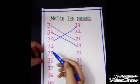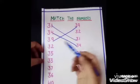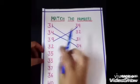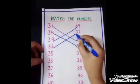Next number is 32, 32. Now, next number is 32, 32. Where is 32 in another line? Yes, this is 32. So match it.